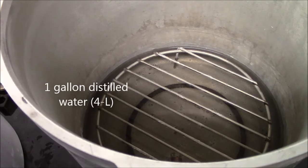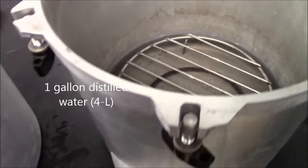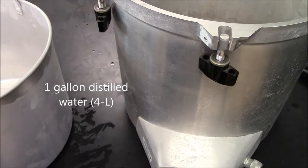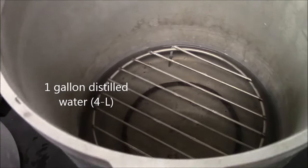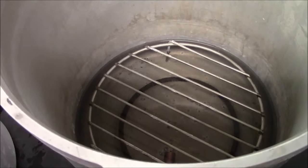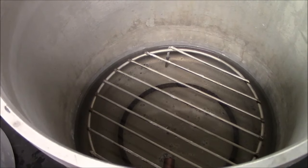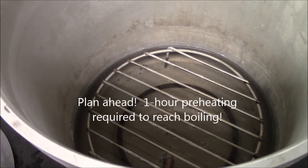I put a gallon of distilled water in the bottom of the pressure cooker. It takes about an hour for it to heat up to boiling temperature so you must plan ahead when you're doing this.